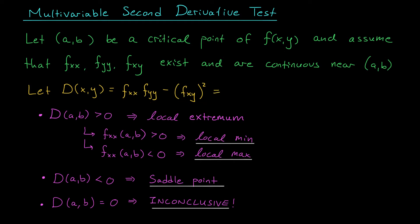If you'd like an easy way to remember this function, you can think of it as the determinant of this two-by-two matrix: fxx, fxy, fyx, fyy. This matrix, by the way, is called the Hessian matrix.